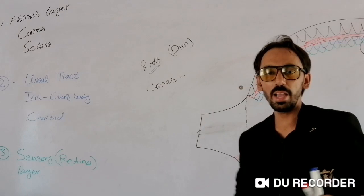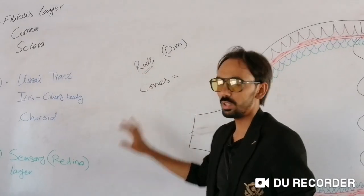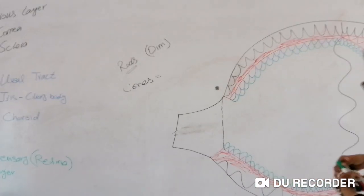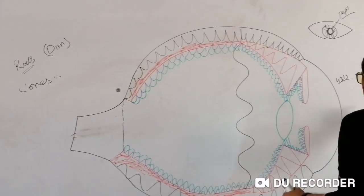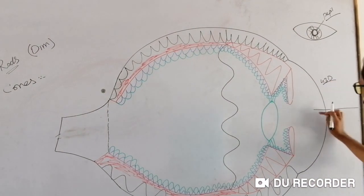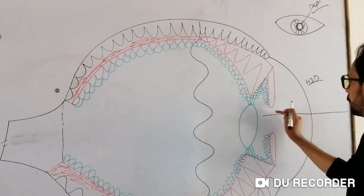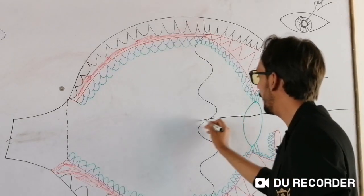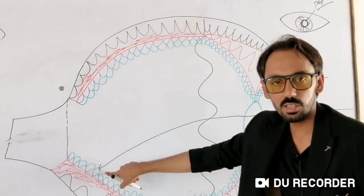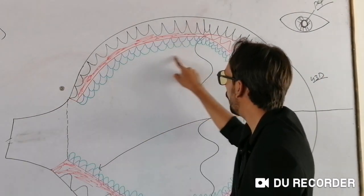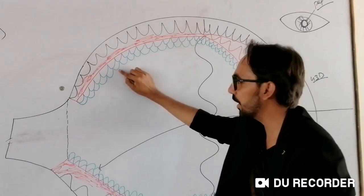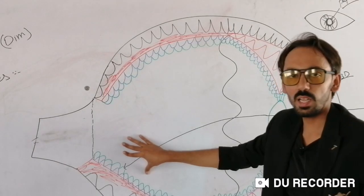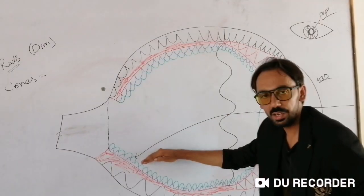The rods and cones have a major function: these two photoreceptor cells can convert electromagnetic light into an action potential — an electrical current. When light passes through the cornea, then through the pupil, it hits the crystalline lens. After gaining refractive power, it hits the sensory retina. The neurosensory retina contains the photoreceptor cells, which convert electromagnetic light into action potentials.